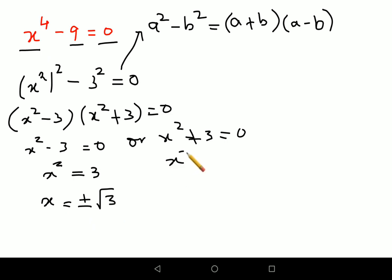Similarly here also I will say x square equals to minus 3. So I will write this as x square equals to 3 into minus 1. So taking roots, I will get plus minus root of 3, root of minus 1 is nothing but i.